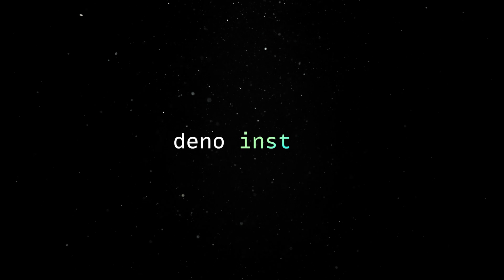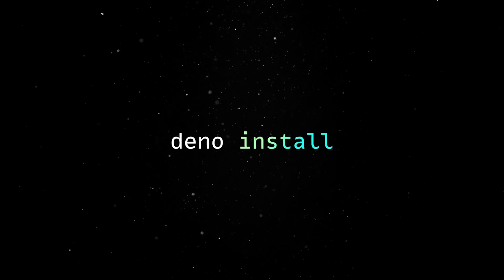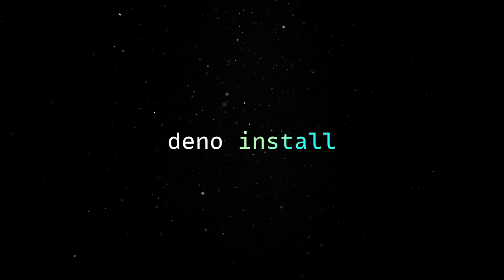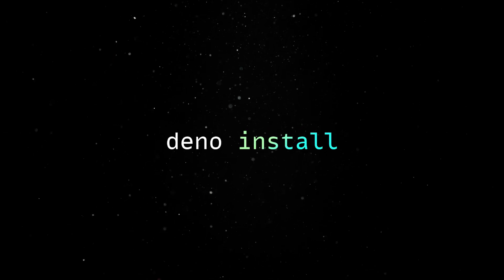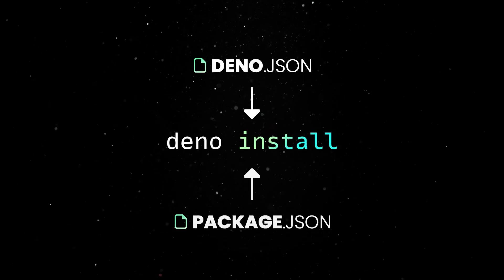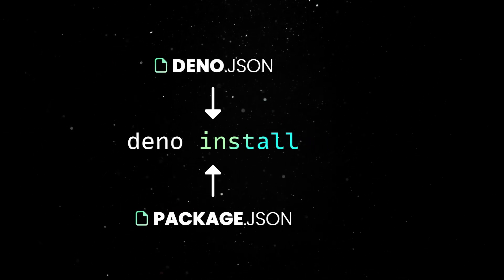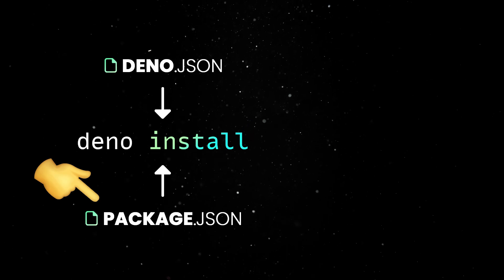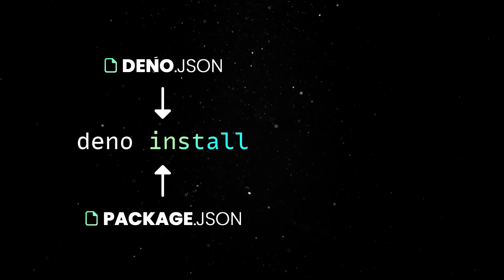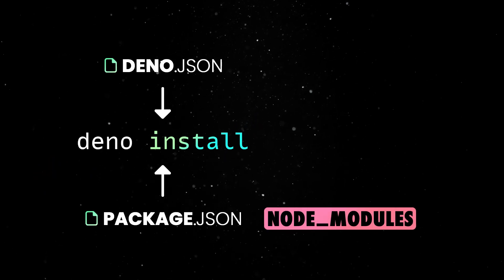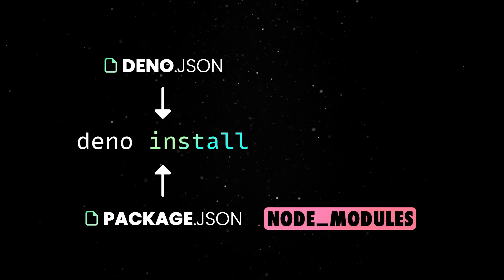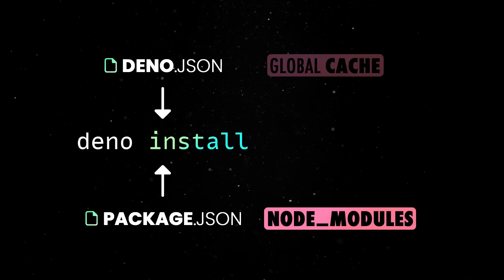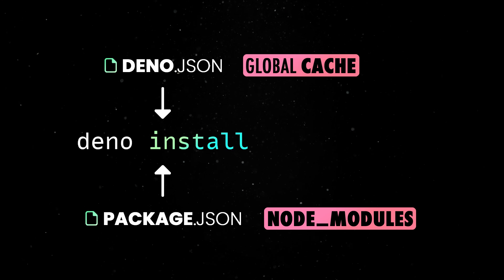Like npm install, deno install installs all dependencies listed in deno or package.json files. If a package.json is present, npm dependencies will be installed in node_modules. Otherwise, Deno installs packages in the global cache.